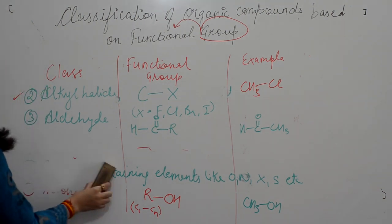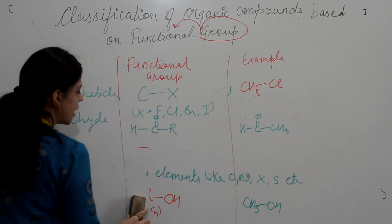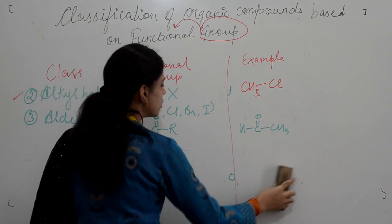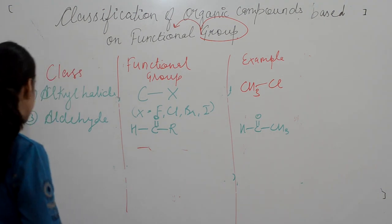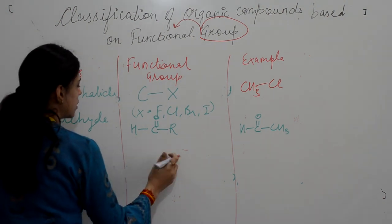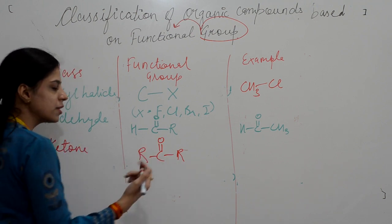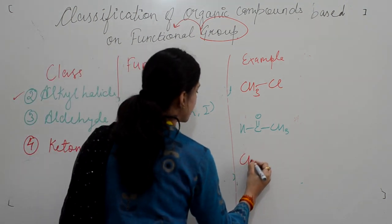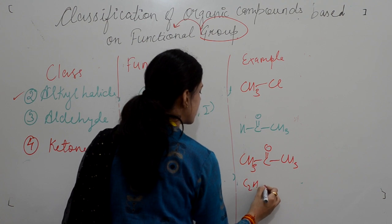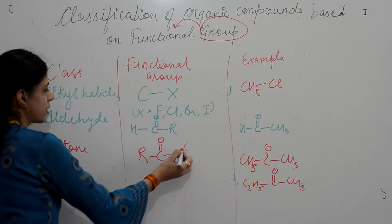The next class is ketones. Ketones and aldehydes are both carbonyl compounds. The only difference is: in aldehydes, the carbonyl group is attached to one hydrogen and one alkyl chain, whereas in ketones, the carbonyl group is attached to either the same or different alkyl chains (R-C=O-R'). If the alkyl chains are the same, the example is acetone.